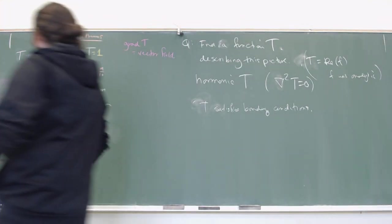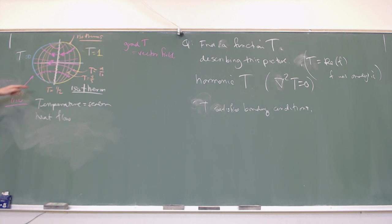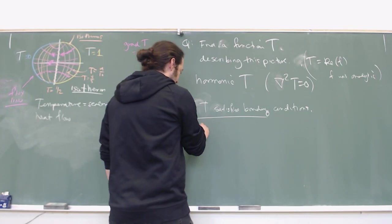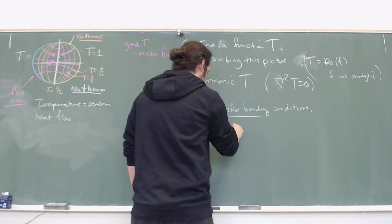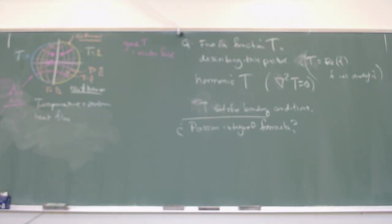If we're working in the disk, our tool is the Poisson integral formula. Is this a Dirichlet or Neumann problem? Dirichlet — because we've given boundary values and not boundary derivatives. But I really don't want to use the Poisson integral formula if I can avoid it. If only we could find a conformal map of that disk to a more reasonable shape.